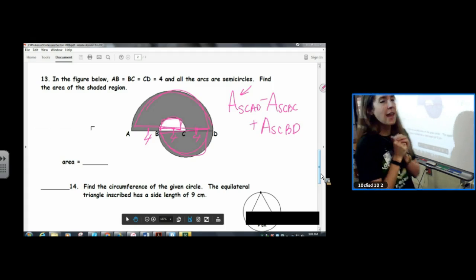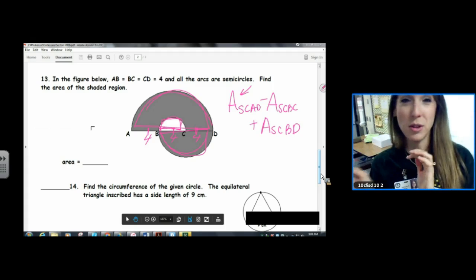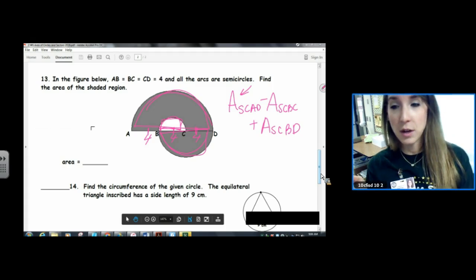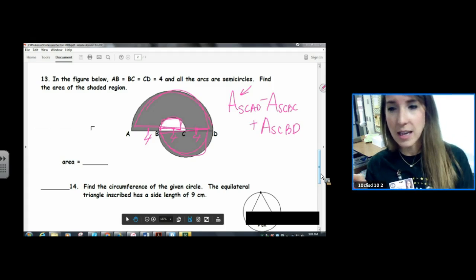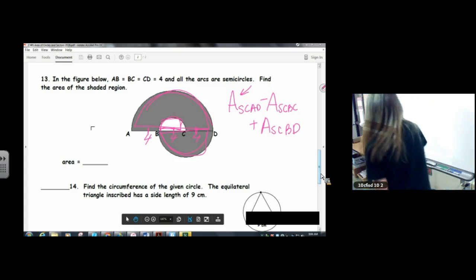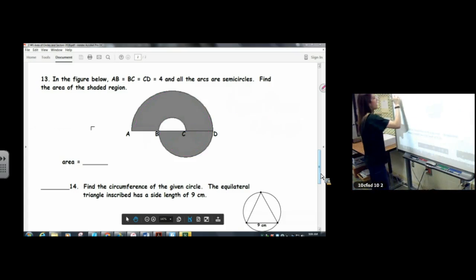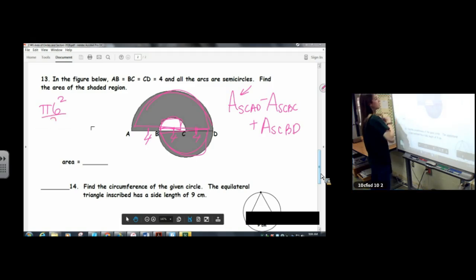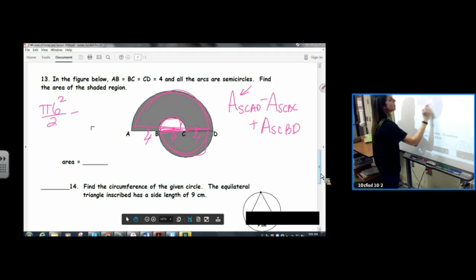All right, so what is the radius of this one right here, of AD? Well, let's see. The length from A to D is 4 times 3, it's 12. So the radius of circle AD with diameter AD is 6. Pi r squared. It's a semicircle, so divide by 2. Excuse me. Let's do the next one. What's the radius of this semicircle?